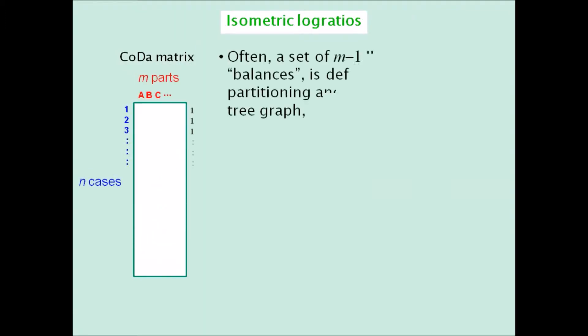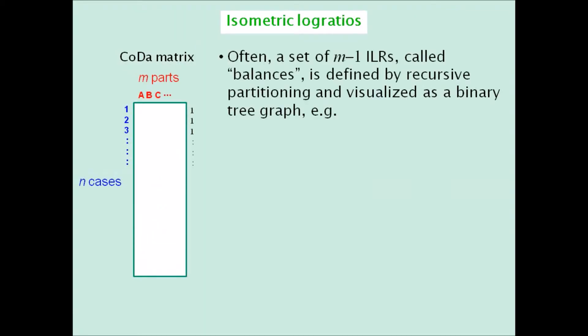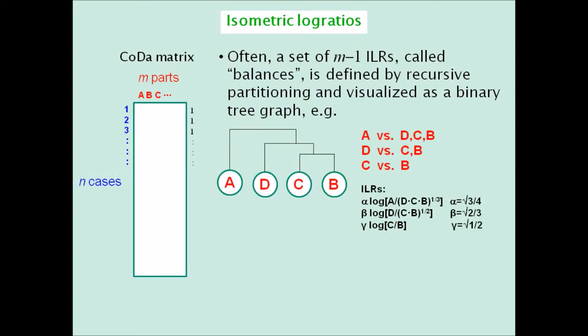Often a set of ILRs — one less than the number of parts — is defined and called balances, defined by recursive partitioning that can be represented as a graph in the form of a binary tree. For example, in a simple four-part example, A would be contrasted against D, C, and B; then D against C and B; and finally C against B.